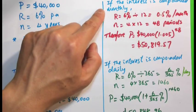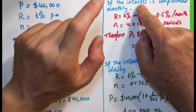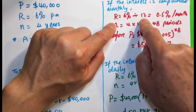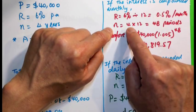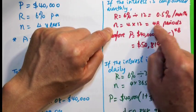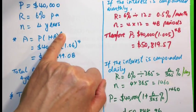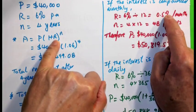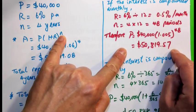If the interest is compounded monthly, there are 12 months in a year, so the interest is divided by 12, giving 0.5% per month. N is 4 years times 12 months, which is 48 periods. Using the same formula A equals P times (1 plus r) to the power of n, with r = 0.5% and n = 48, we get $50,819.57.